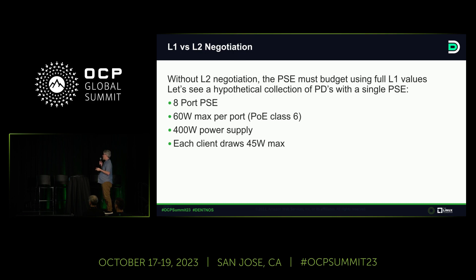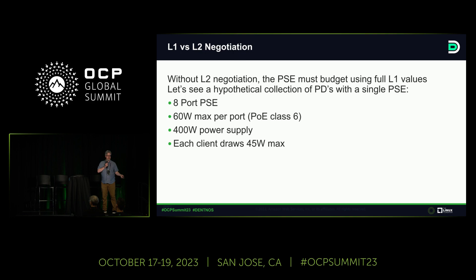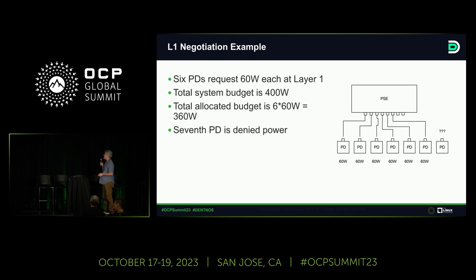Here's a hypothetical example: we have an 8-port PSE doing up to Class 6, 60 watts per port, designed with a 400-watt power supply. If you do the math, with all 60-watt devices you tap out at six devices — you can't power the last two. But if the devices we're plugging in only need 45 watts, you can power all eight off that single 400-watt supply. At L1, all devices negotiate at 60 watts. The first six do great, but at that point the switch is delivering 360 watts, leaving no budget for the seventh device.